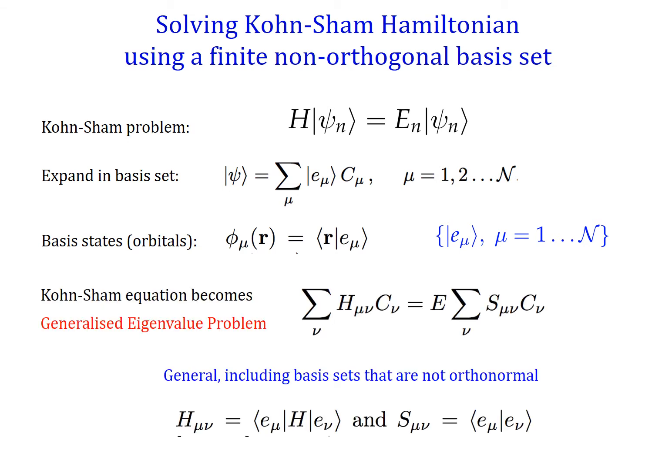There is this generalized eigenvalue problem, which is a very canonical problem in linear algebra and there are many tools to solve it. It involves two matrices defined at the bottom: the Hamiltonian matrix, which is obtained from the basis set and the Hamiltonian, and the overlap matrix, which is also something we can pre-calculate.